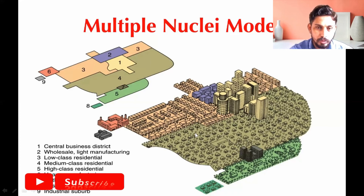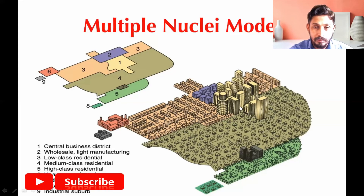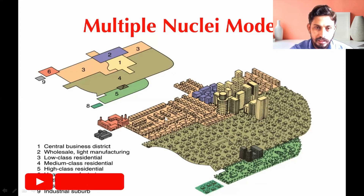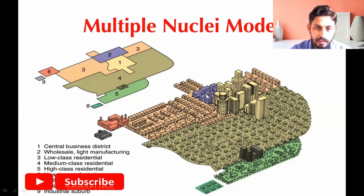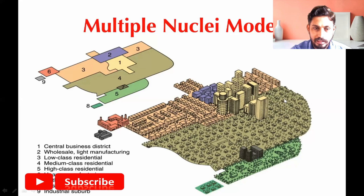There are nine zones described by Harris and Ullman. The first is the Central Business District, which is the center of all commercial, political, and social activities. The second, shown in blue, acts as a wholesale and light manufacturing nucleus. The third is the low-class residential area, located near the CBD and wholesale and light manufacturing zones, where workers who work in those areas reside.